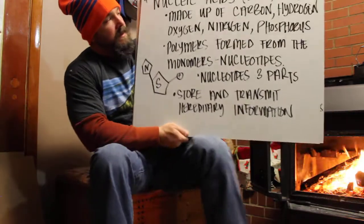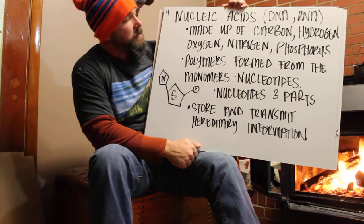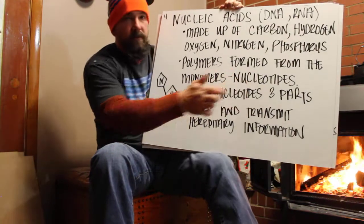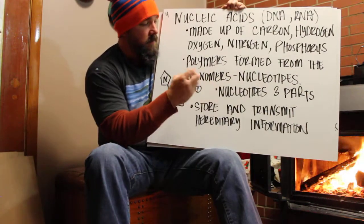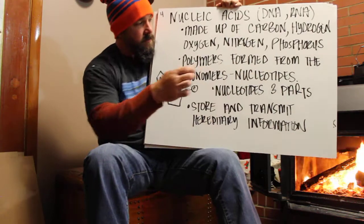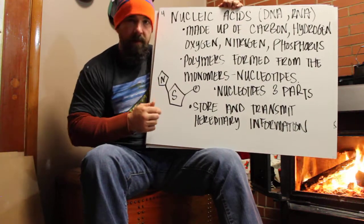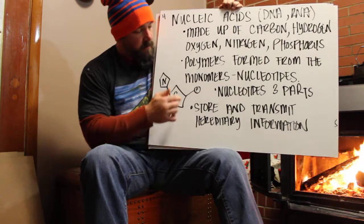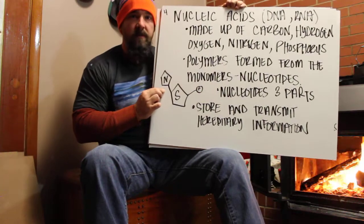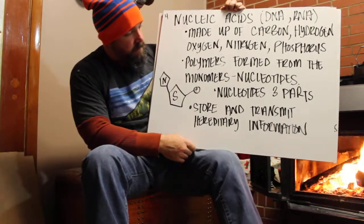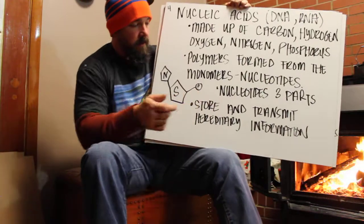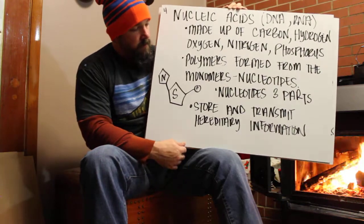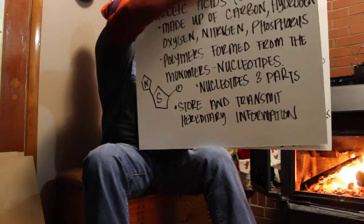Nucleic acids are DNA and RNA. These are made up of carbon, hydrogen, oxygen, nitrogen, and phosphorus. Polymers form from the monomer nucleotides. The single unit is a nucleotide. Nucleotides get strung together, and there are three things that make up the nucleotide: a five-carbon sugar, which is either ribose or deoxyribose; a phosphate group; and a nitrogenous base. There are four of those and you should know what they are. These store and transmit hereditary information — the DNA is where the information that tells you who you are is stored.